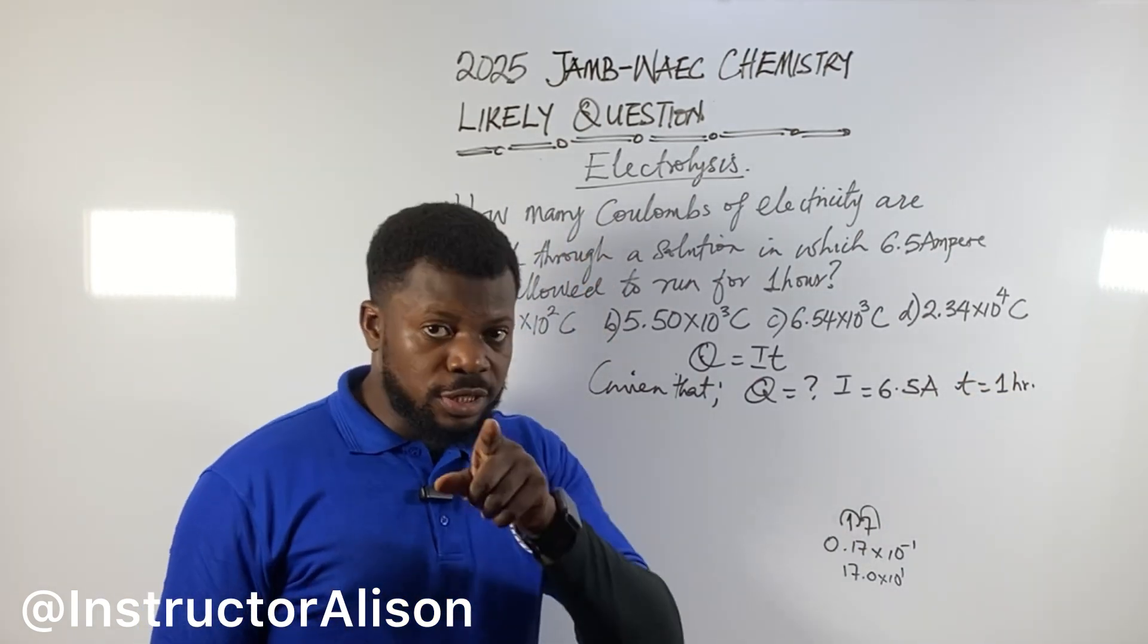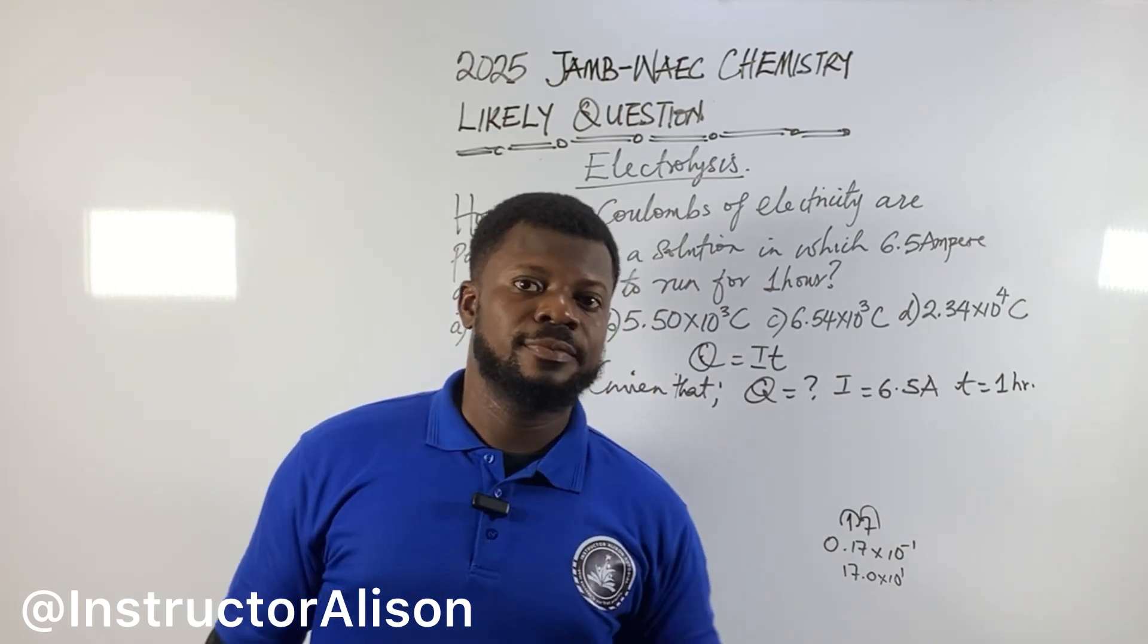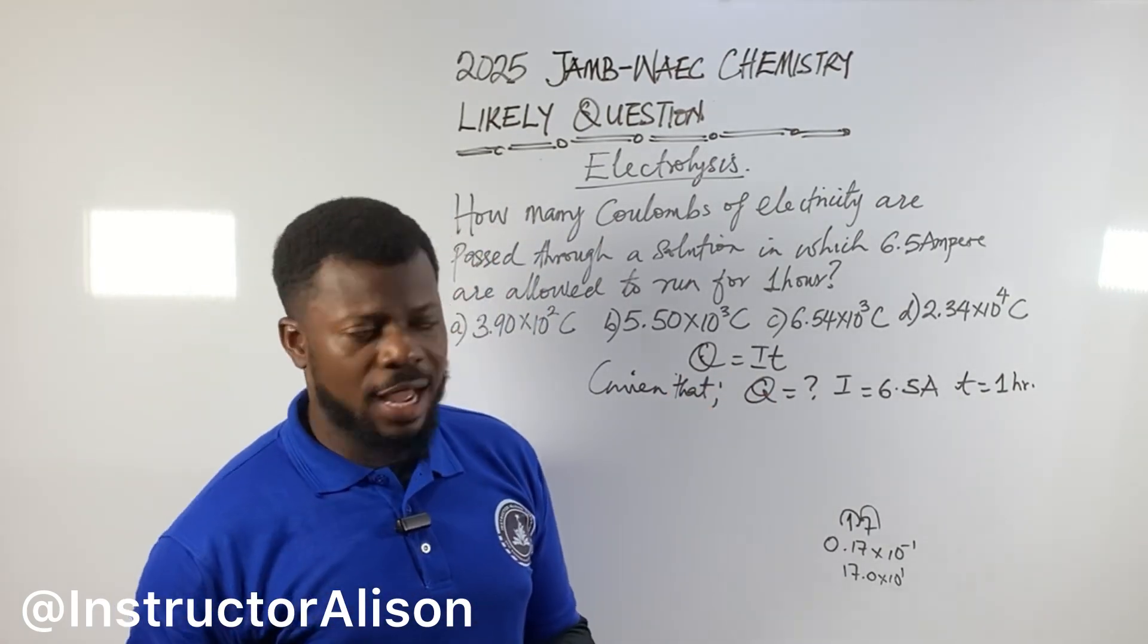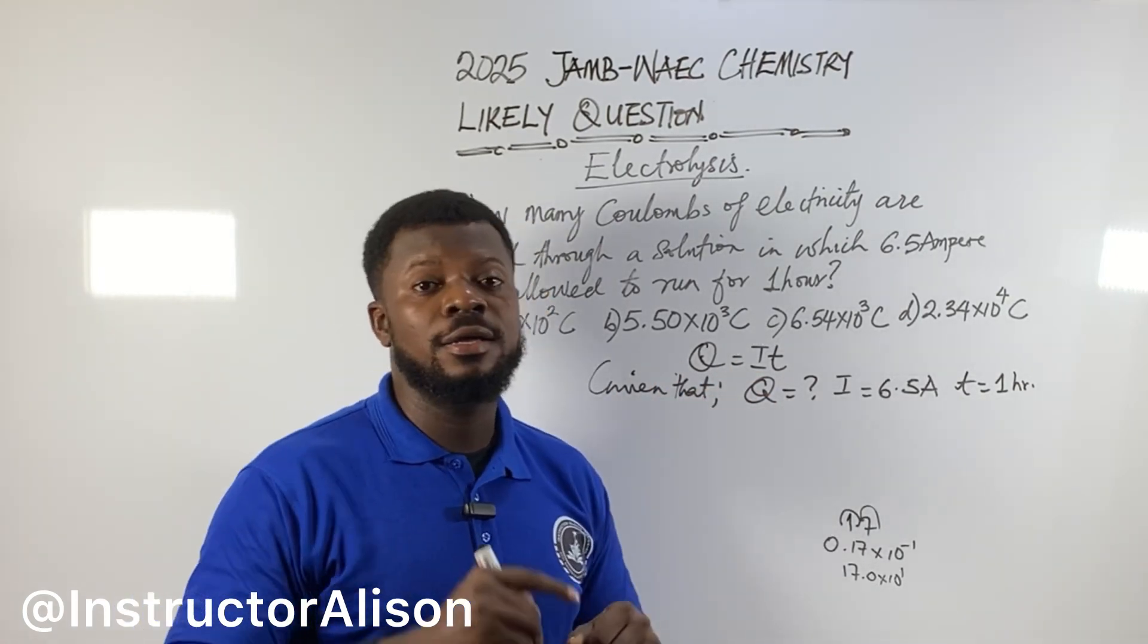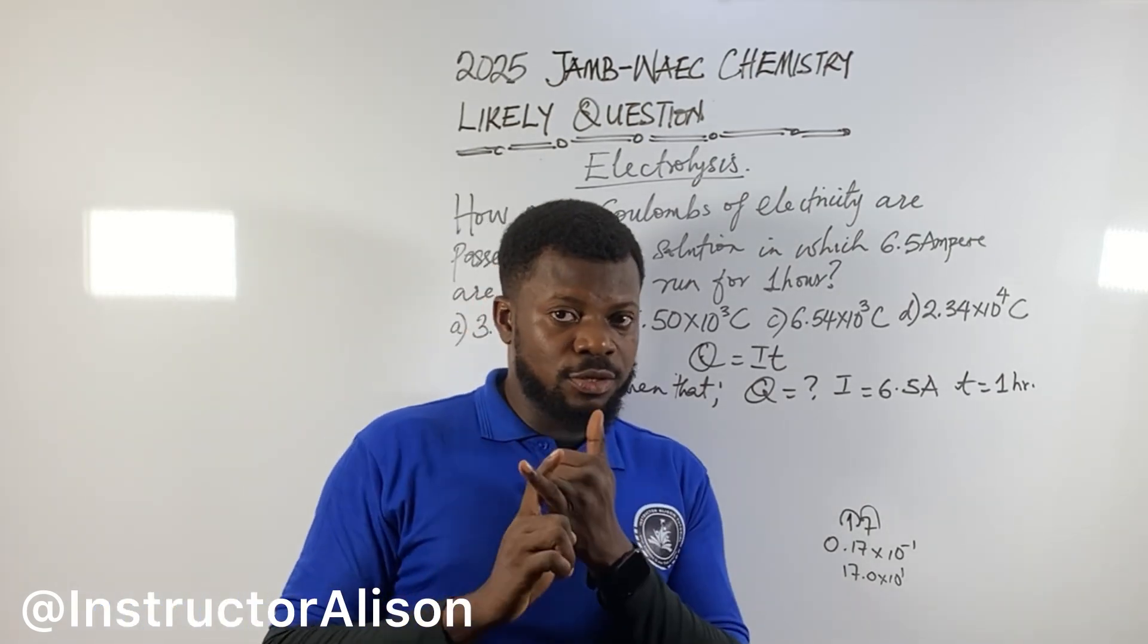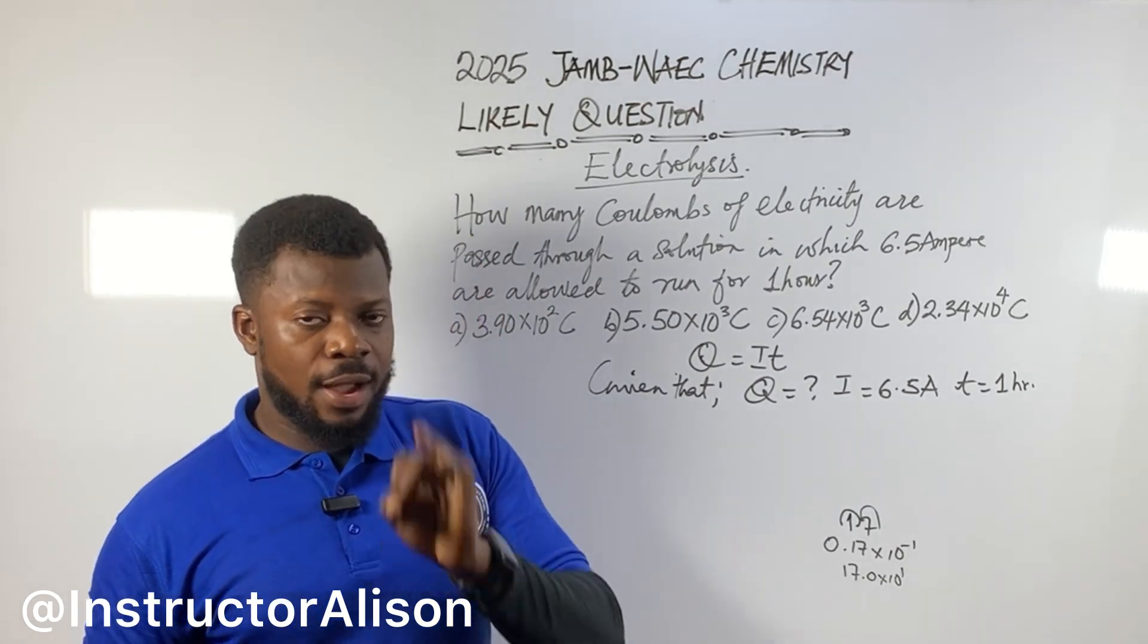But since you're going to solve something, you know time must always be in seconds. Even if they give you minutes, convert back to seconds. If they give you hours, still convert back to seconds. How do you convert one hour to seconds? It's simple. Remember, 60 seconds gives you one minute, 60 minutes gives you one hour. How many times do I see 60? Two times. So 60 times 60.